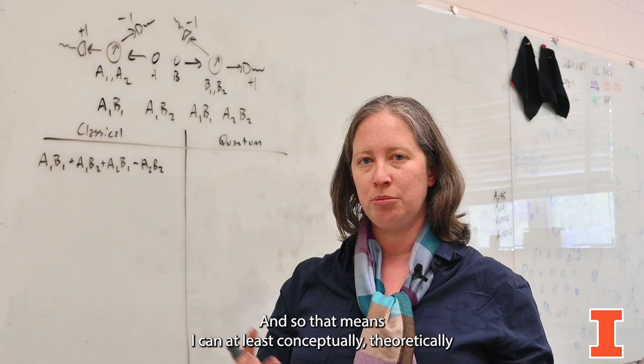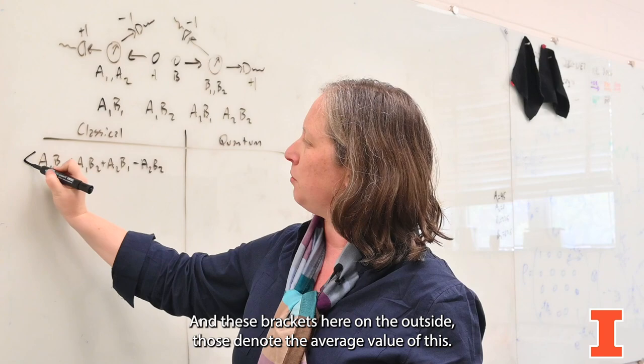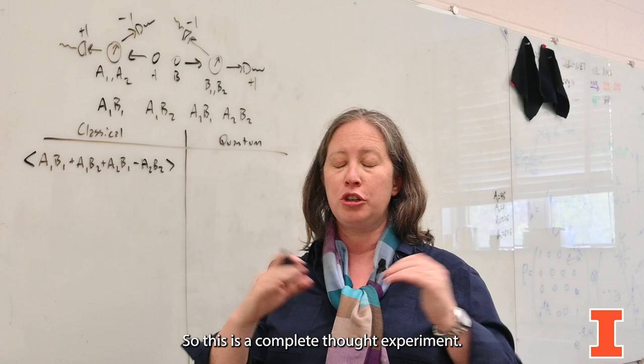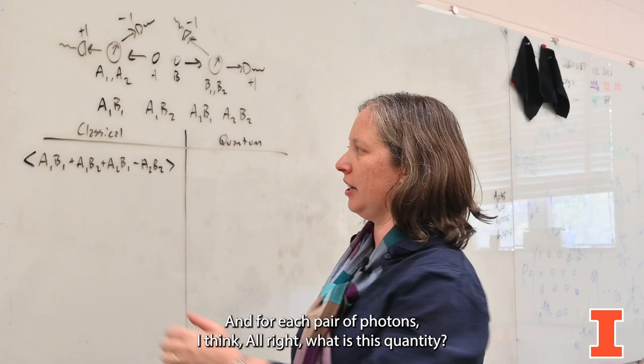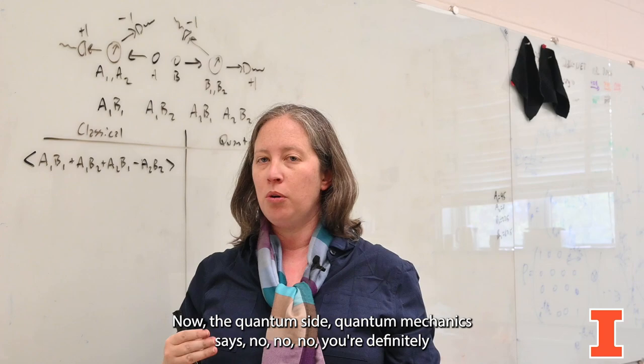I can think what would the outcome have been if I had been able to make this measurement. So that means I can at least conceptually, theoretically, consider the average value of this. These brackets here on the outside denote the average value. So this is a complete thought experiment. I make my two photons many, many, many times, and for each pair of photons I think, all right, what is this quantity?